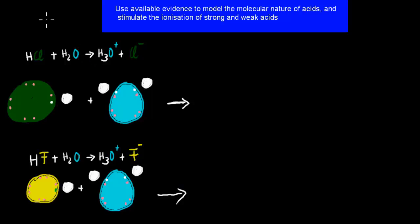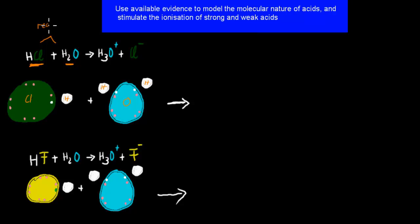Imagine these are your balls and sticks. You have one chlorine, one hydrogen, one oxygen, and two hydrogens — so this is your hydrogen chloride, and this is your water molecule. These are the reactants. They're going to react together, and what happens when we create an acid is the initial substance reacts with water to form the acid.